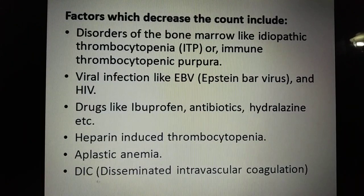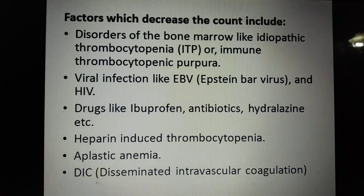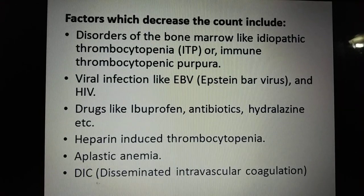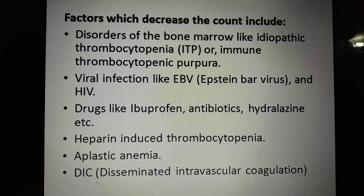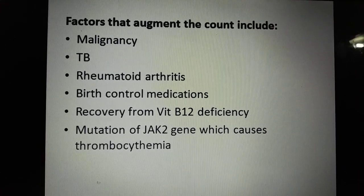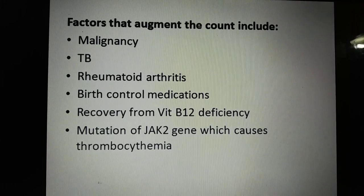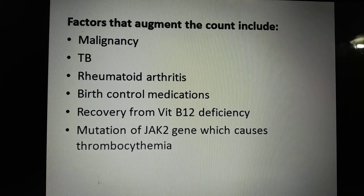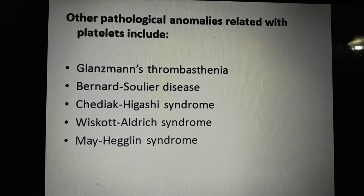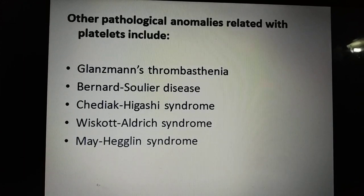Platelet count decreases in bone marrow disorders like idiopathic thrombocytopenia (ITP) or immune thrombocytopenic purpura, viral infections like Epstein-Barr virus and HIV, certain drugs like ibuprofen, antibiotics, hydralazine, heparin-induced thrombocytopenia, aplastic anemia, and disseminated intravascular coagulation. Platelet count increases in malignancy, tuberculosis, rheumatoid arthritis, birth control medications, recovery from vitamin B12 deficiency, and mutation of the JAK2 gene causing thrombocythemia. Other pathological platelet anomalies include Glanzmann's thrombasthenia, Bernard-Soulier disease, Chédiak-Higashi syndrome, Wiskott-Aldrich syndrome, and May-Hegglin anomaly. That concludes today's class. Thank you.